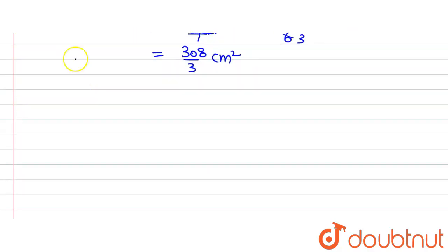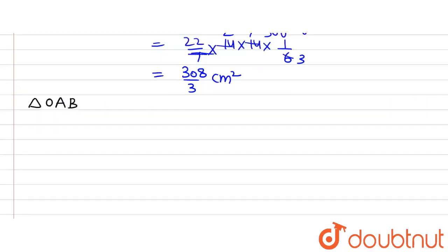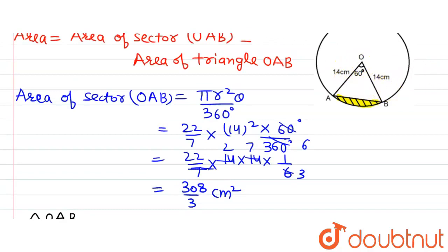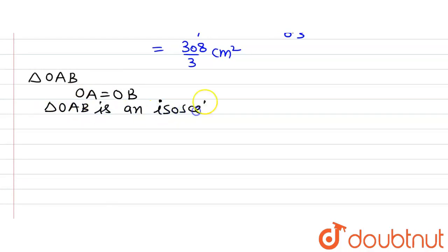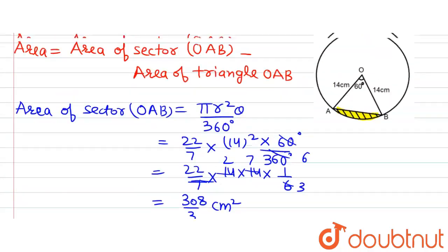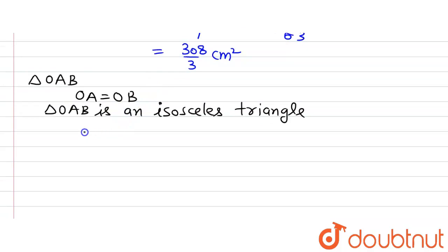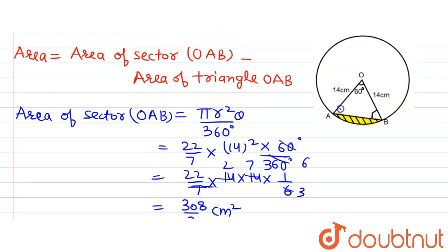Now let us consider triangle OAB. Since OA and OB are both radii, OA equals OB. Therefore, triangle OAB is an isosceles triangle. Because OA equals OB, the angles opposite to the equal sides are also equal — meaning angle B equals angle A.